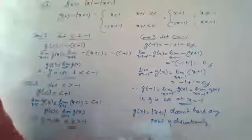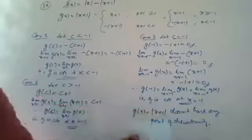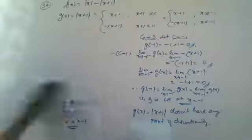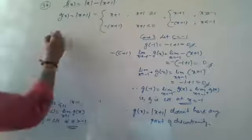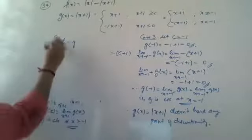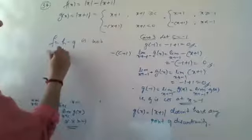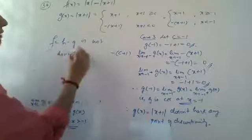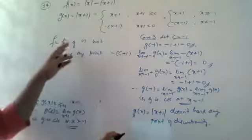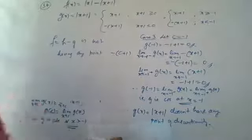Since h of x and g of x both do not have any point of discontinuity, the function f of x equals h minus g also does not have any point of discontinuity. Therefore there is no point of discontinuity for the function f of x equals mod x minus mod of x plus 1.